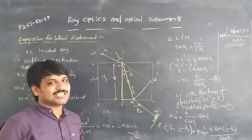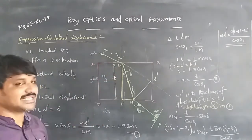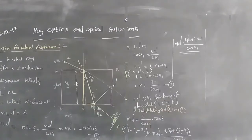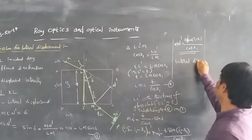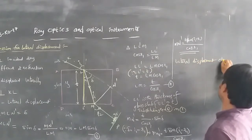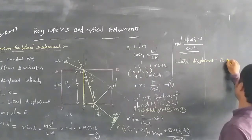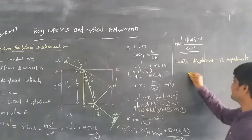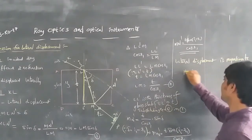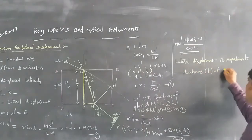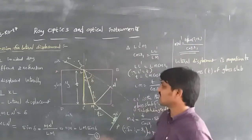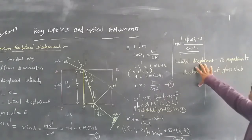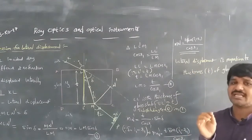This is the lateral displacement when a light ray passes through a glass slab. The lateral displacement is proportional to the thickness of the glass slab — as the thickness increases, the lateral displacement also increases.